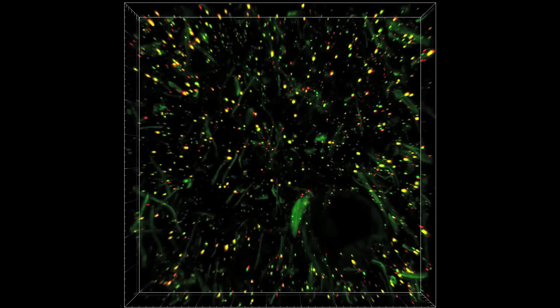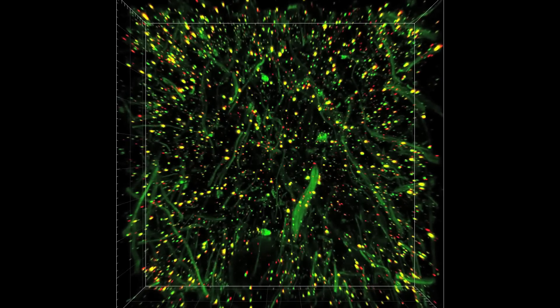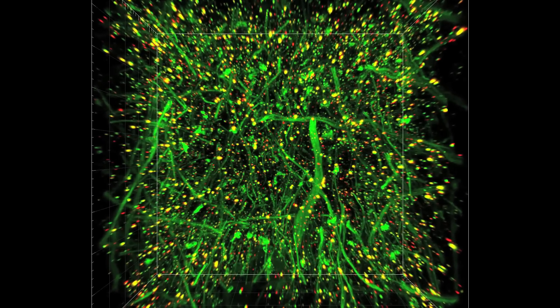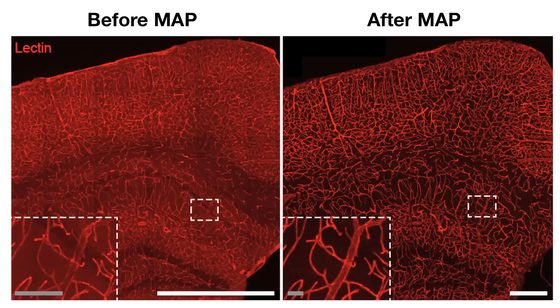Once the tissue is expanded, the researchers use an off-the-shelf antibody to fluorescently tag specific proteins they'd like to image. Then, using a microscope, the researchers are able to obtain images with a resolution as high as 60 nanometers, much better than the usual 200 to 250 nanometer limit of light microscopes, which are constrained by the wavelength of visible light.